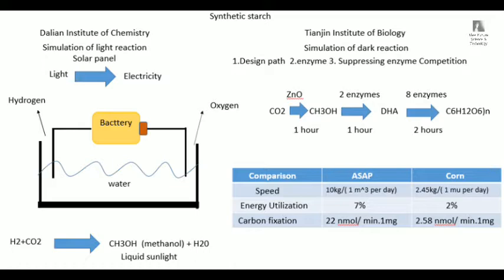First, through something like a solar panel, light energy is converted into electricity. After converting to electricity, this electrical current is put into an electrolysis device containing water. When water is electrolyzed, it forms oxygen and hydrogen. So in the first step, we convert light energy into hydrogen.